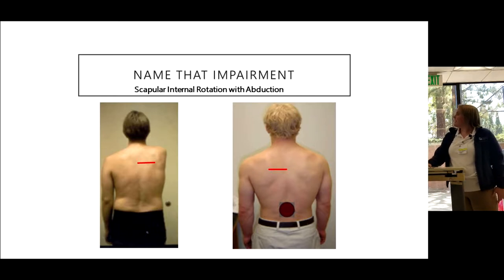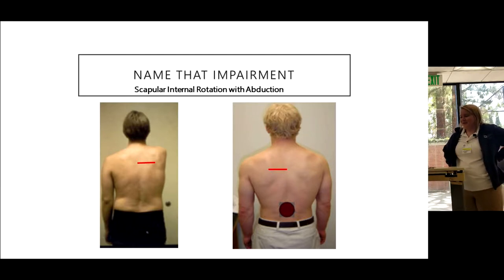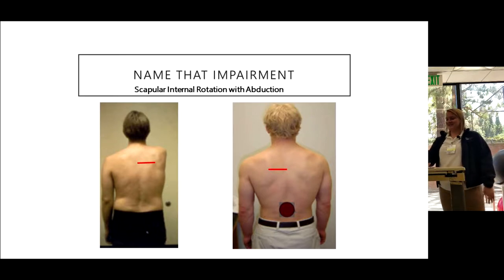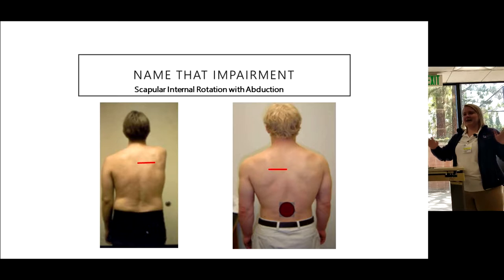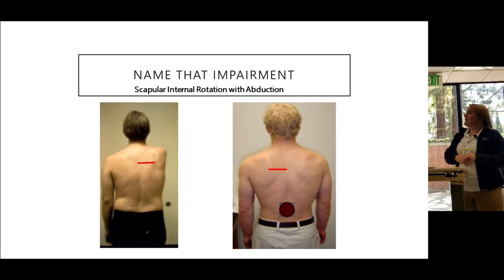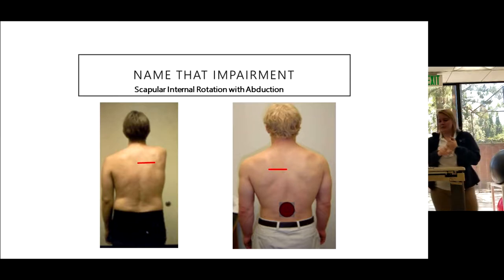This patient was a wrestling coach — that gives you a clue. The diagnosis is internal rotation with abduction: more than three inches from the spine. You see this in wrestlers, kayakers, and people who do that motion a lot. It's also a very common diagnosis, and all of those axial scapular muscles — middle traps, lower traps, rhomboids — are very weak.